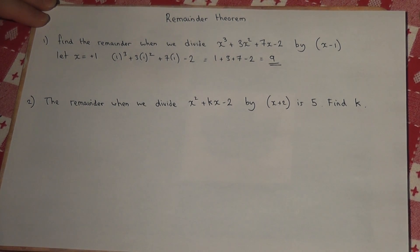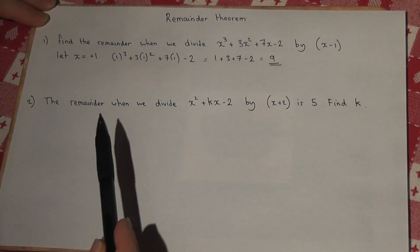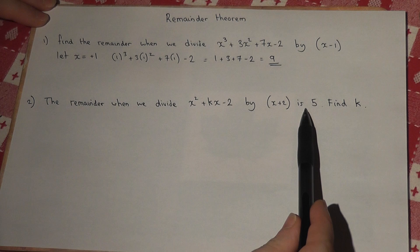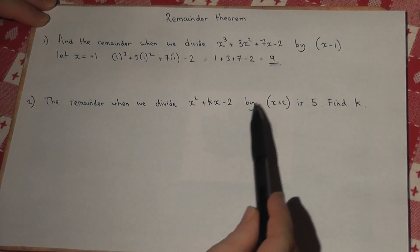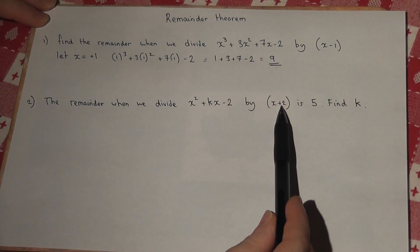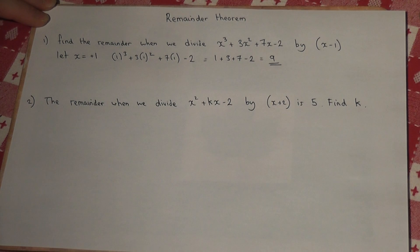So that's a simple use of the remainder theorem. Now sometimes we're told what the remainder is. So this says that if we divide by x plus 2, we get a remainder of 5.